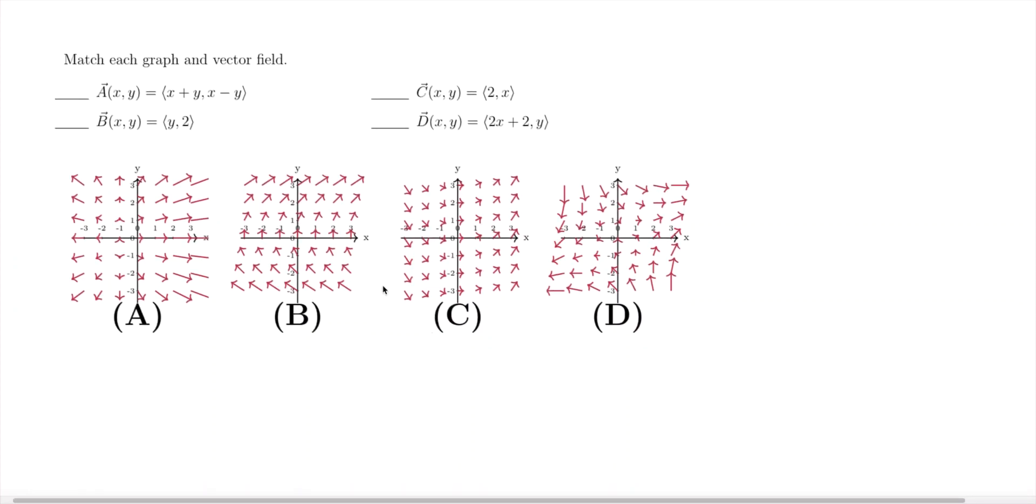I'm graphing vector fields. This is for two-dimensional vector fields. The first question is saying A of x and y is (x+y, x-y). So I'll do a few test points.